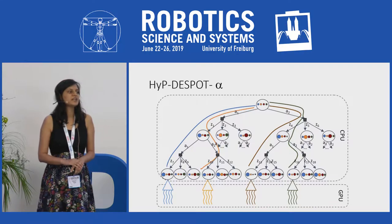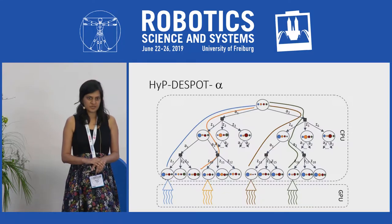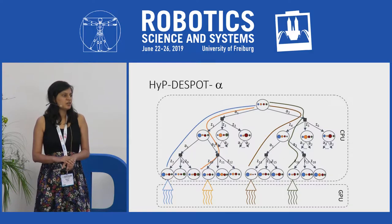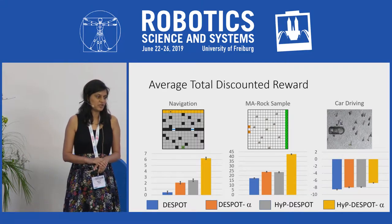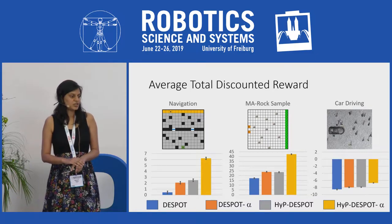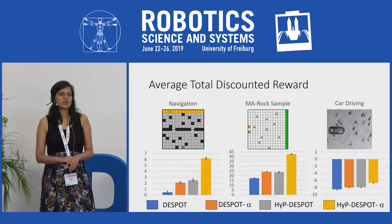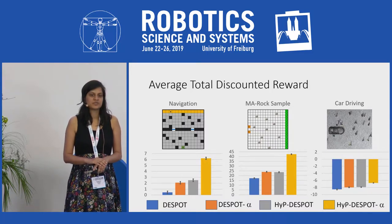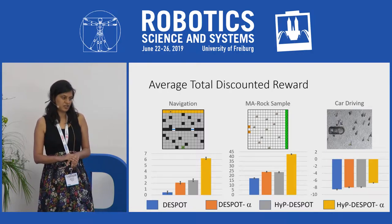We further parallelize DESPOT Alpha using CPU and GPU parallelization ideas provided in HIP DESPOT. Since each node contains k particles, we are able to leverage GPU parallelization better. We test DESPOT Alpha and HIP DESPOT Alpha on various POMDP problems with large observation spaces, including a complex real-world problem of car driving among pedestrians. Results show that we outperform DESPOT and HIP DESPOT, and also scale up to problems with large action space, large state space, and large observation space. Thank you.